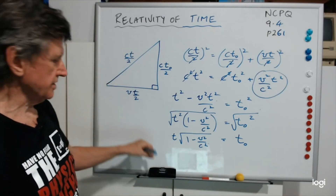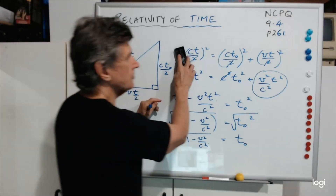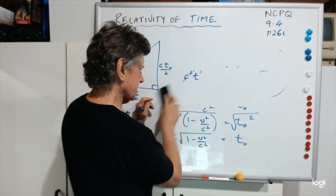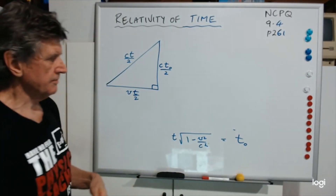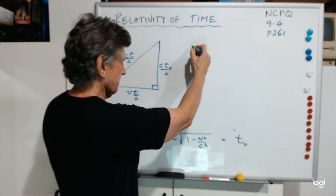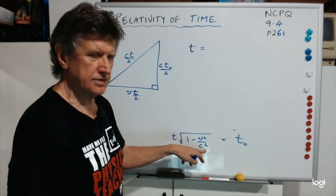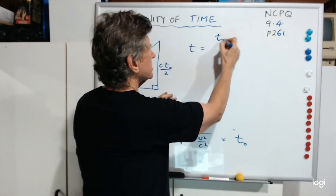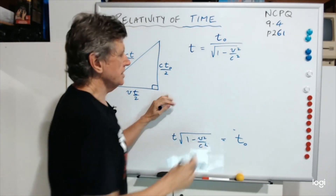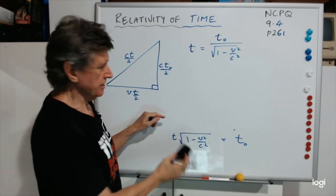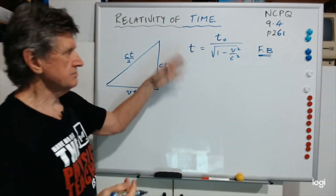Now I'm going to rub all of this off because this is the main formula — that's almost the formula in the formula booklet. I'll divide both sides by √(1 - V²/C²) to rearrange it. This will be in your formula book, so you don't have to learn it — that's how it will appear.